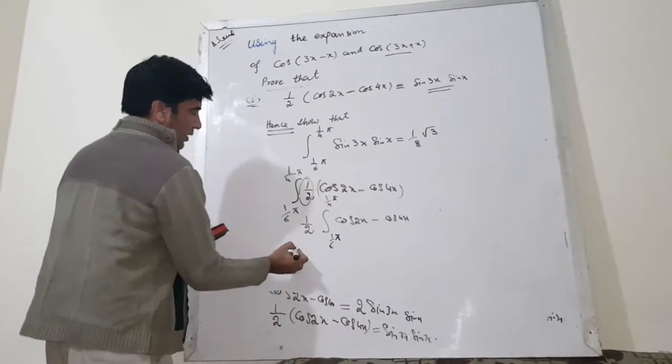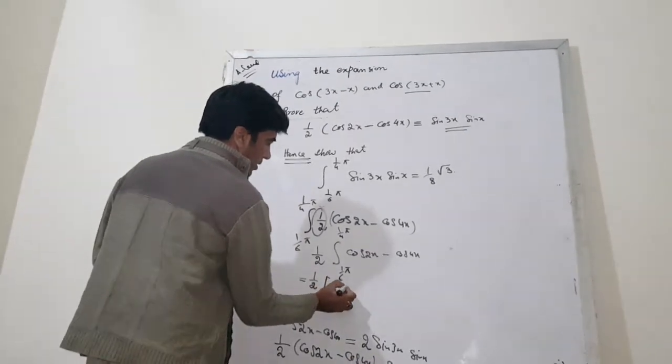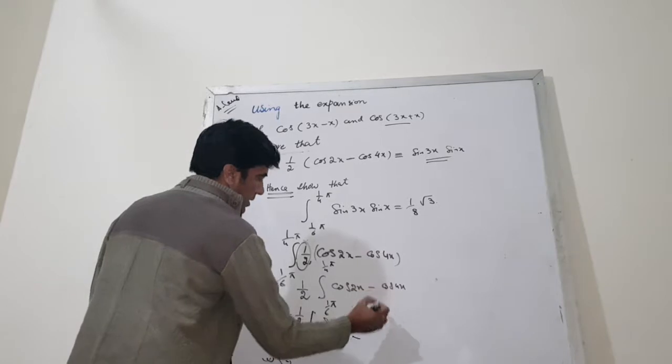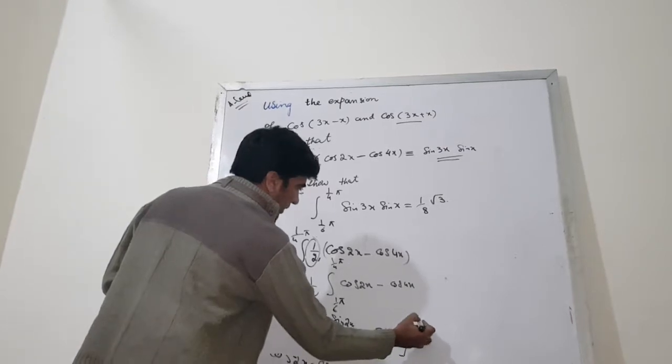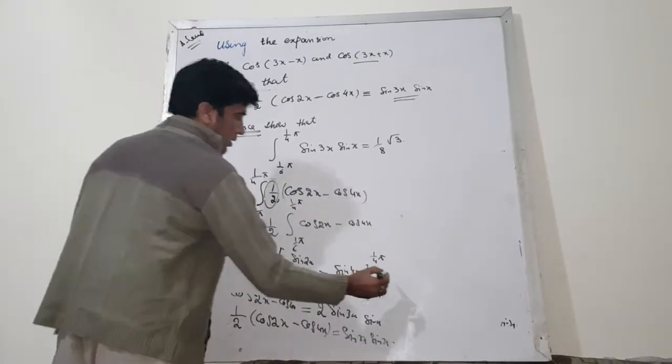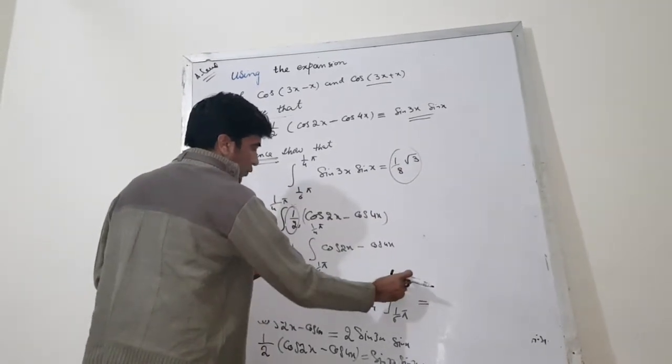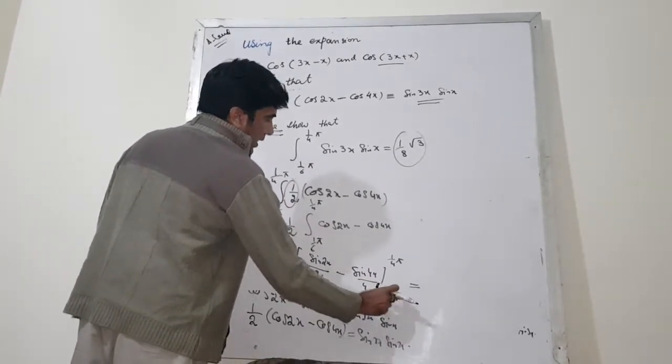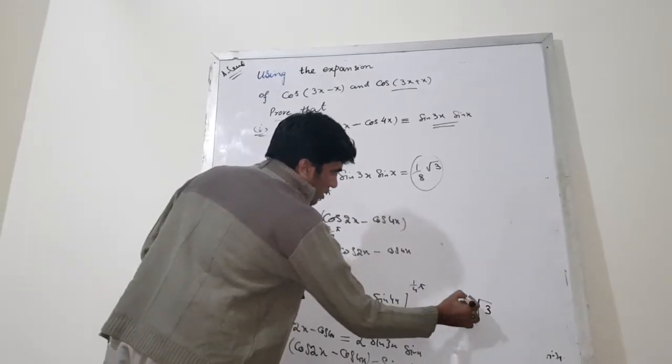Now, further you know, 1 over 2, the integral of this sin 2x over 2 minus sin 4x over 4 and applying the limit. So, you get direct, first you will plug this value of the angle in this answer and then minus, you will use this value in the answer and then you will get 1 over 8 square root of 3.